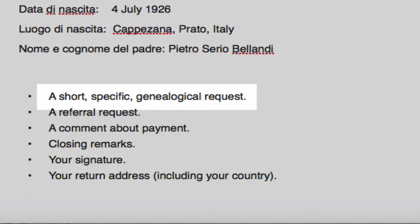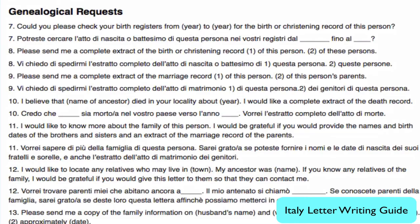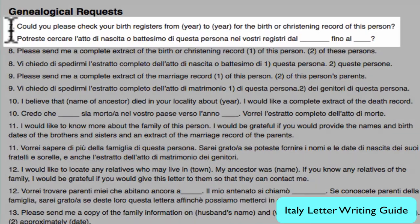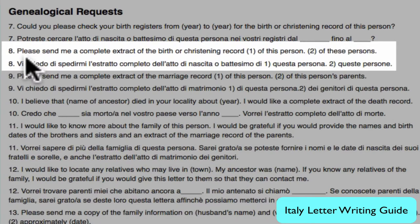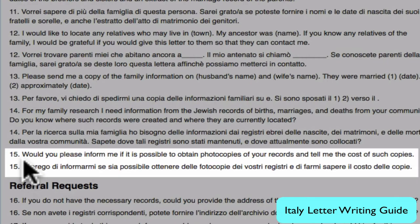Next, we will give details on exactly what it is we're asking for. In the letter writing guide, you will find different requests. I'm going to use number 7 and ask them to check their birth registers for her birth, and number 8, asking them to send me a complete extract of the birth record. I am going to use number 15 and ask them to let me know if it's possible to get a photocopy and what that would cost.